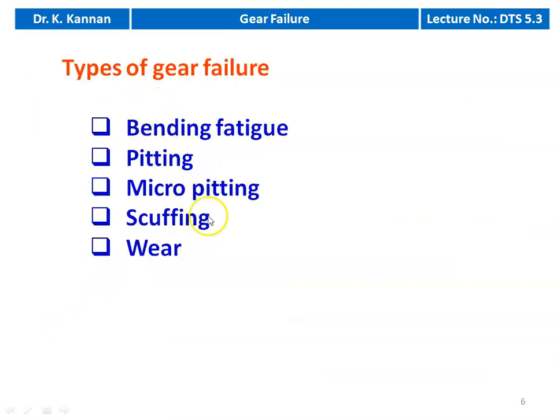There are five different types of gear failure: bending fatigue, pitting effect, micro pitting, scuffing, and wear. We will see each one in detail.